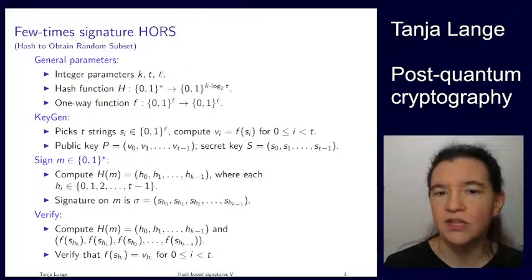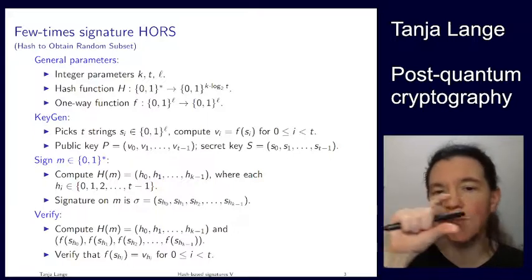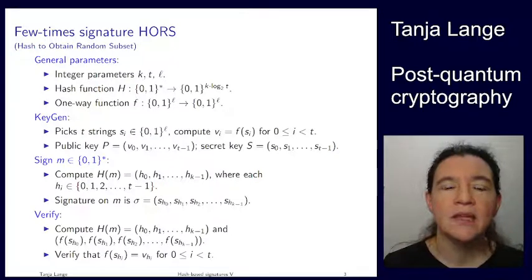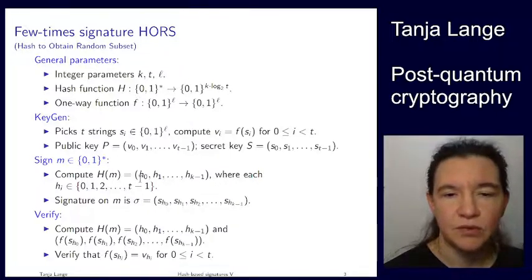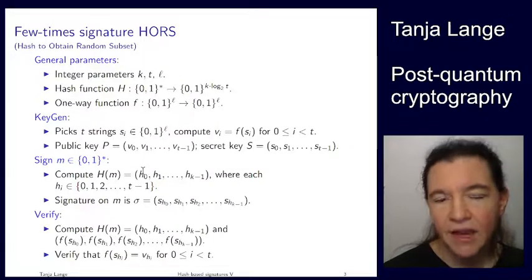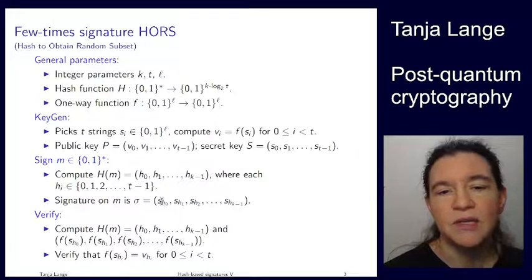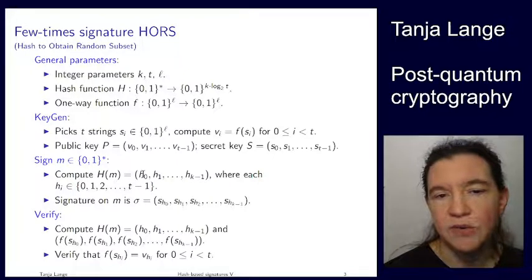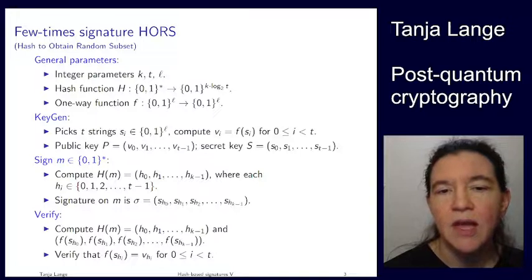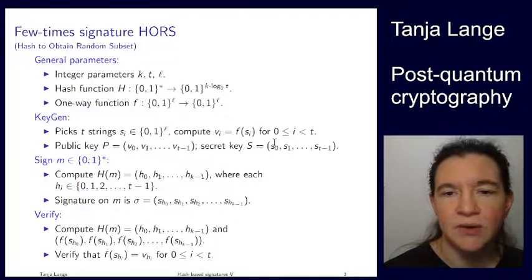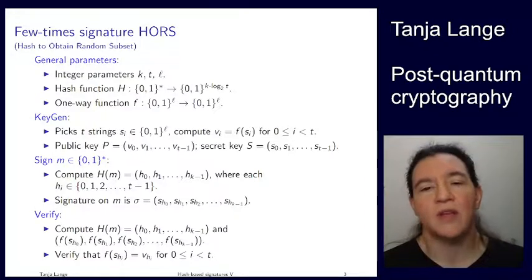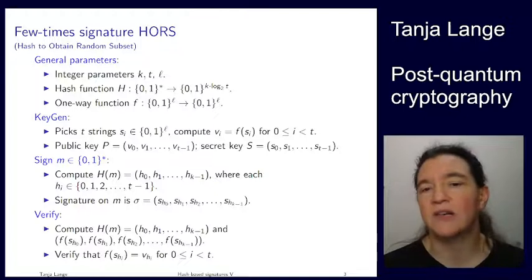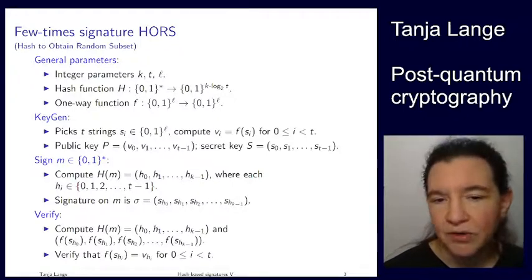And then we want to sign a message. We first compute the hash of this message. And again, this is the special hash function where we're having k components, each being a number between 0 and t minus 1. And then the signature, we're looking up what is this value. So h sub 0 is, say, 7. And then what we're issuing as the first component is s sub 7. So whatever this value is as a number between 0 and t minus 1, that's the index. So we go into our secret key and give them different components. And all this one might appear here. So there is no ordering. And they might appear twice. If you have released s0 already, you might release it again because this position might require another s0.